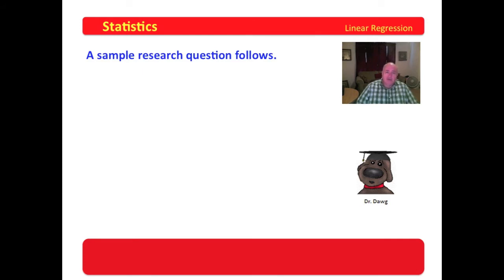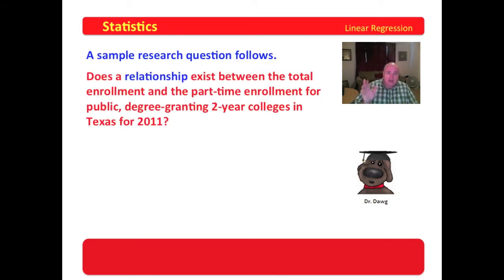Now, I'm going to astound you with the depth of this sample research question. Here it comes. Does a relationship exist between the total enrollment and the part-time enrollment for public degree-granting two-year colleges in Texas for 2011? Now, obviously, guys, I've just developed a database and a data set. I've obviously extracted for two-year degree-granting public community colleges in Texas in 2011 the total enrollment and the part-time enrollment. Does a relationship exist between the two? That's the question.